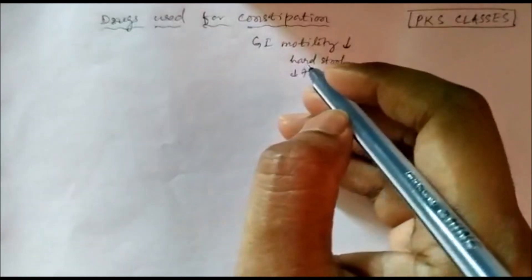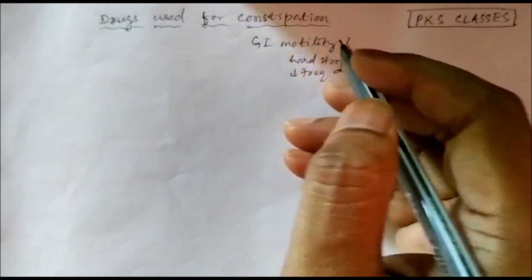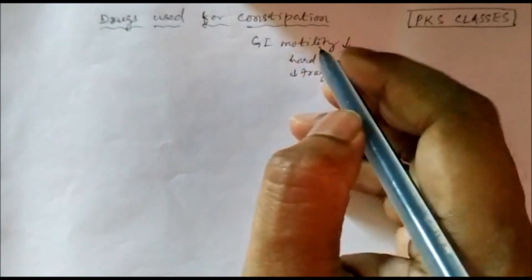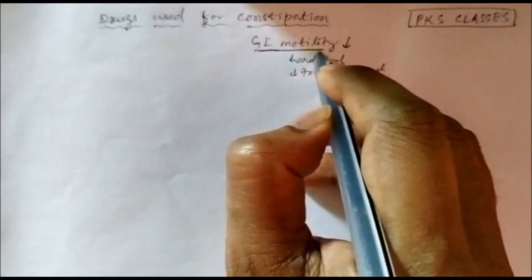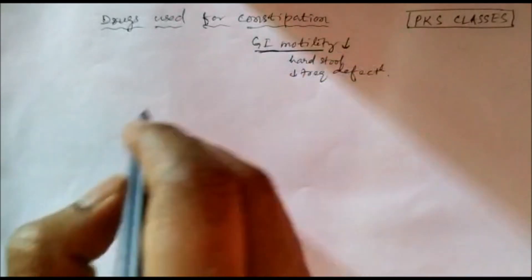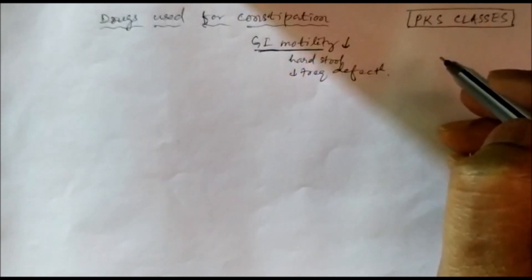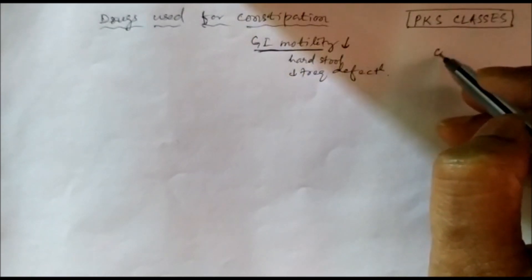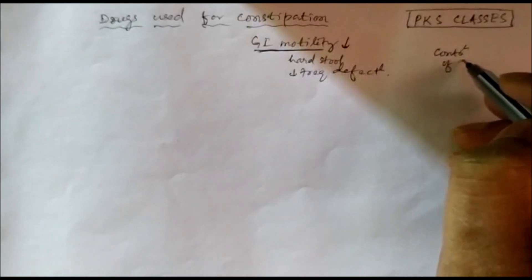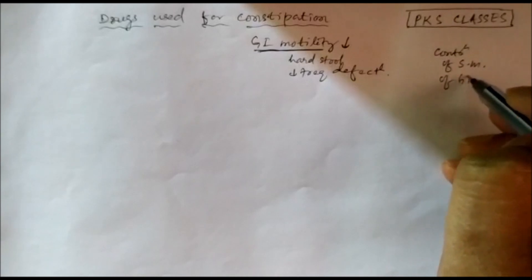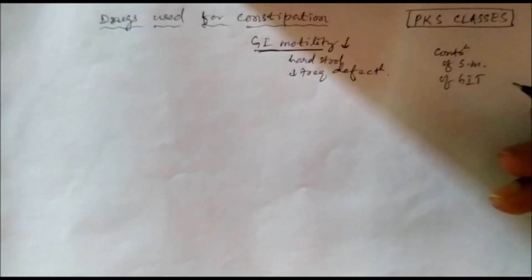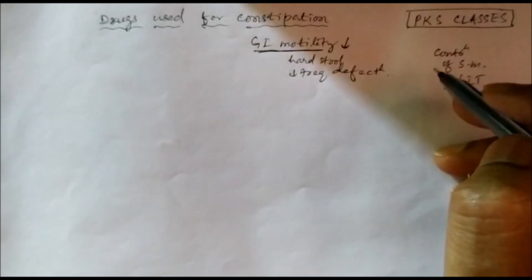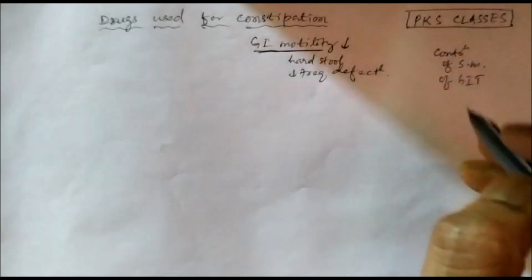We can treat constipation with drugs that can increase the motility. Gastrointestinal motility means the contraction of smooth muscles of the GIT. Contraction of smooth muscles of the GIT causes motility, so the GI contents move downwards.